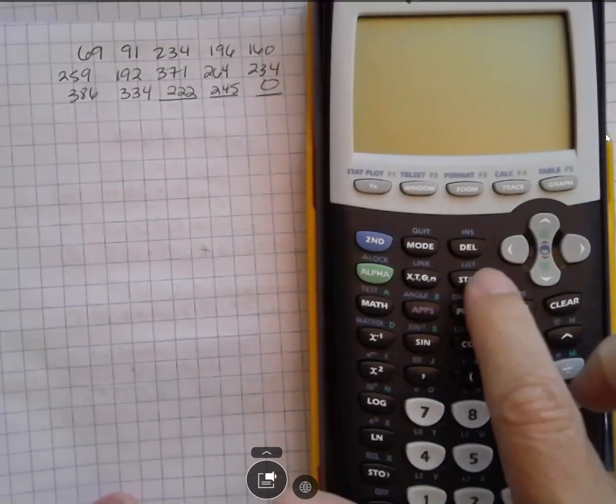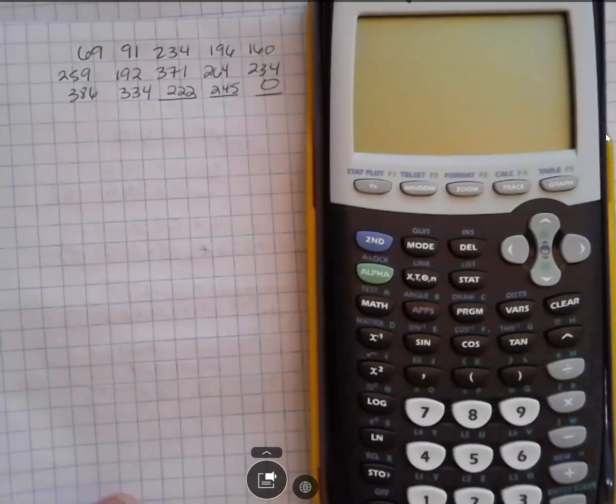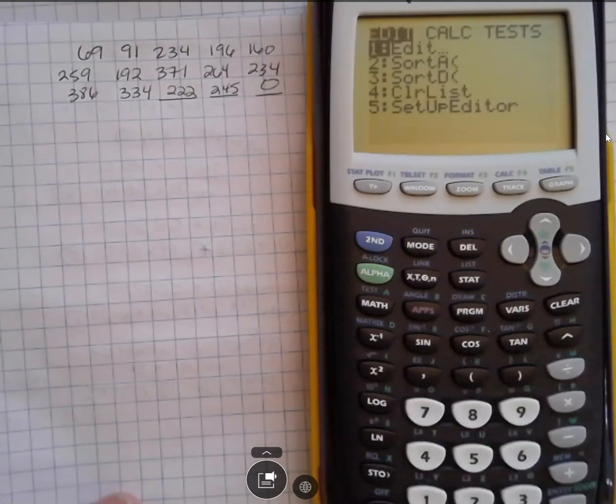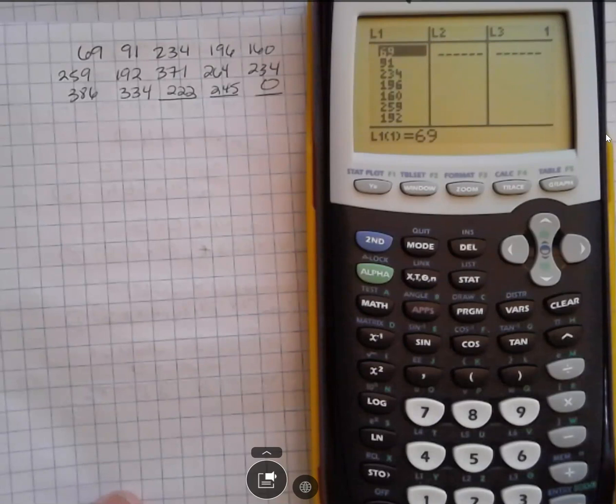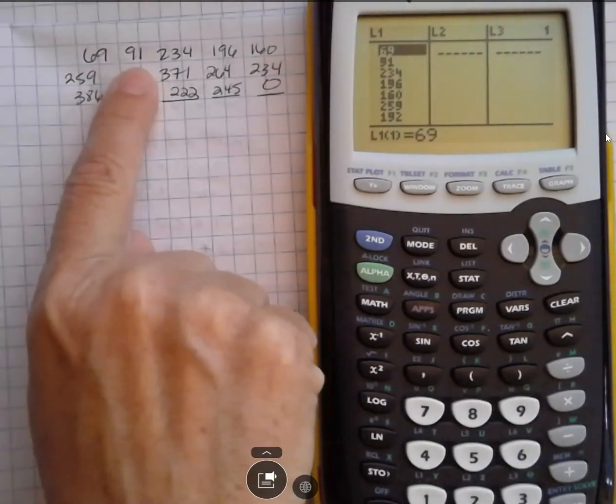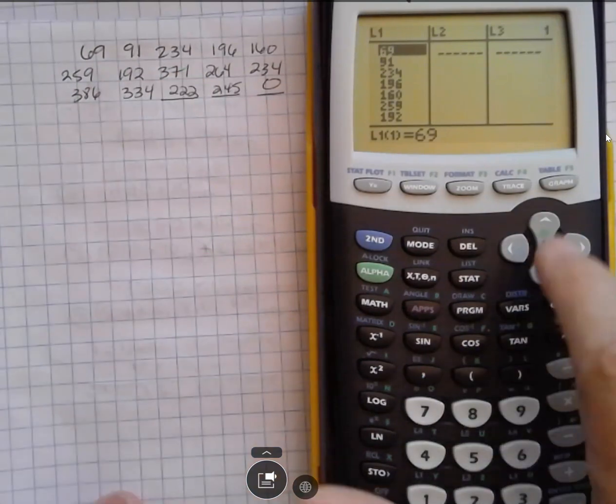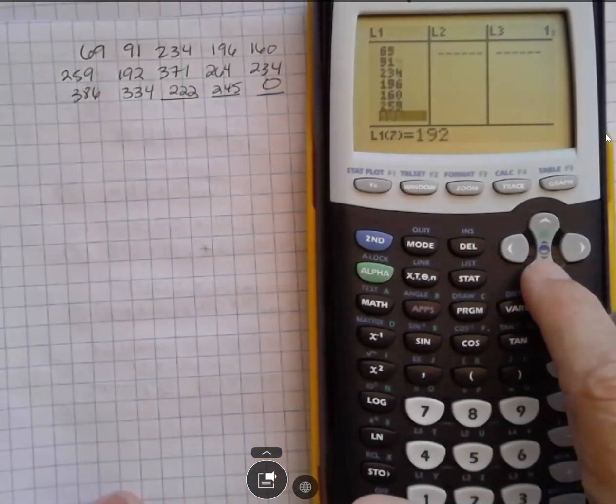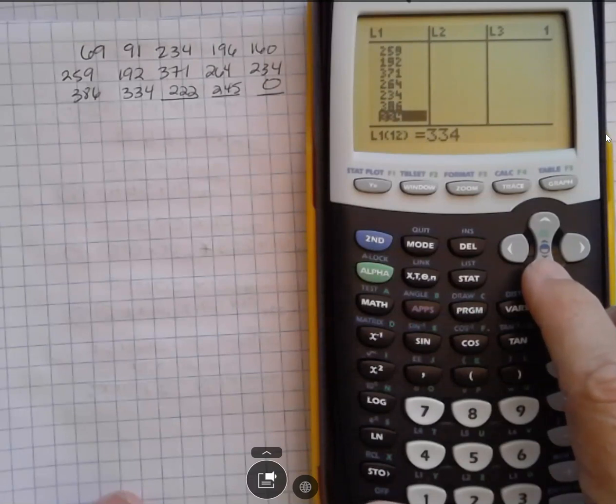But how you're going to get to that is you're going to push STAT and then hit enter. And you're going to see a list. And you can see my list starts with 69 and then 91, 234 and so forth. So I'm going to scroll down until I'm out of that, down to where I think I ended at 334.